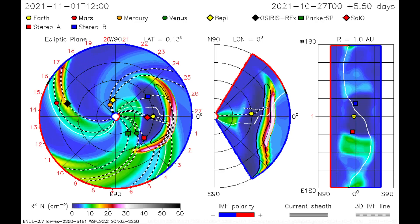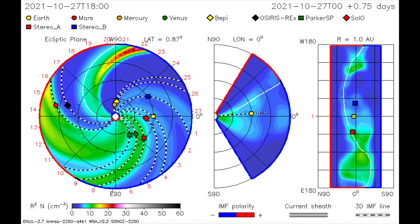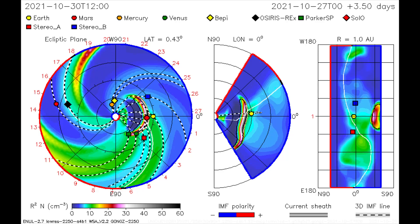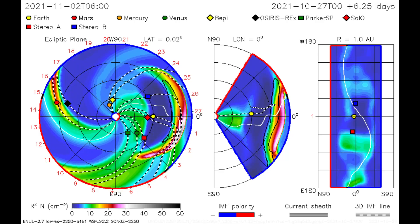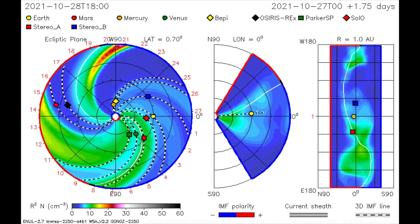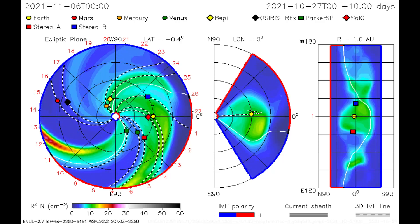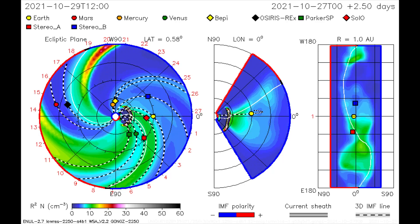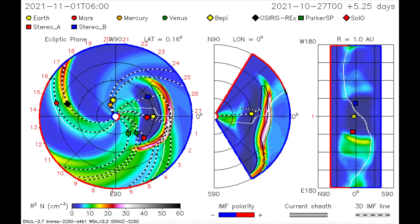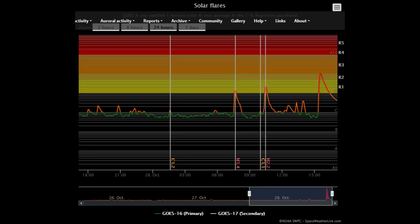With this CME model the X-flare is mapped. We see on the 31st the Earth and Venus take the full force of the flare, and the stereo satellites, CETEN and the Parker SP satellites get a dose of radiation as well. Happy Halloween.